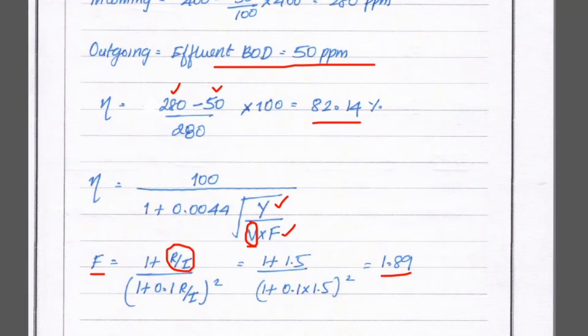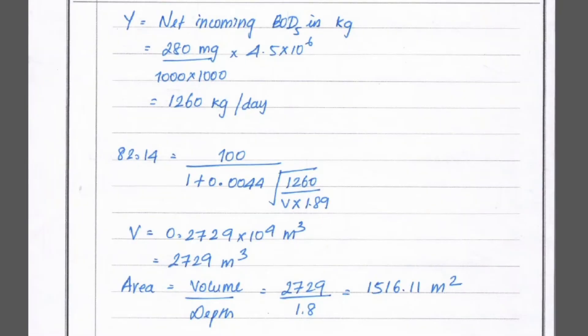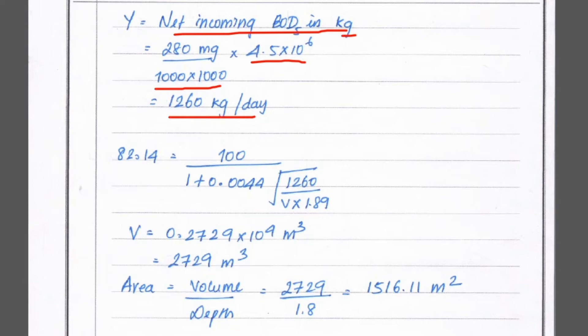Next, we find the y value, which is the net incoming BOD in kg/day. Incoming BOD is 280 ppm. Converting: y = 280 / (1000 × 1000) × 4.5 × 10⁶ = 280 × 4.5 = 1260 kg/day. So y = 1260 kg/day.